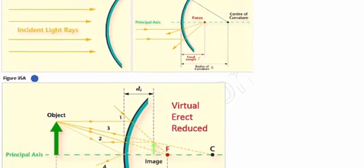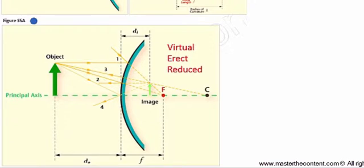Now, if you take a look here at figure 35A, as you would expect, the convex mirror forms a virtual image on the opposite side of the mirror.